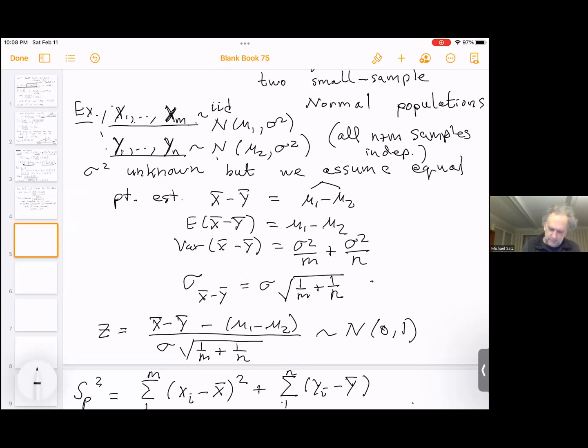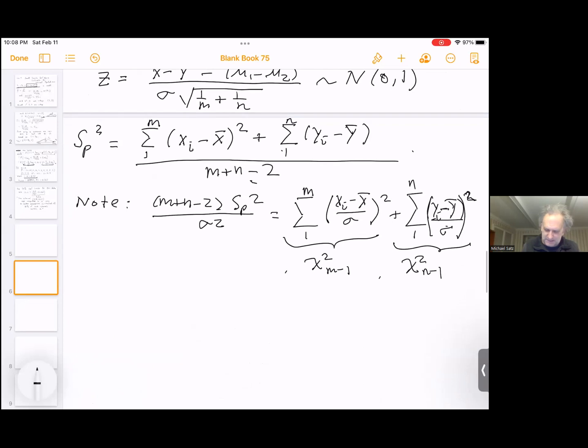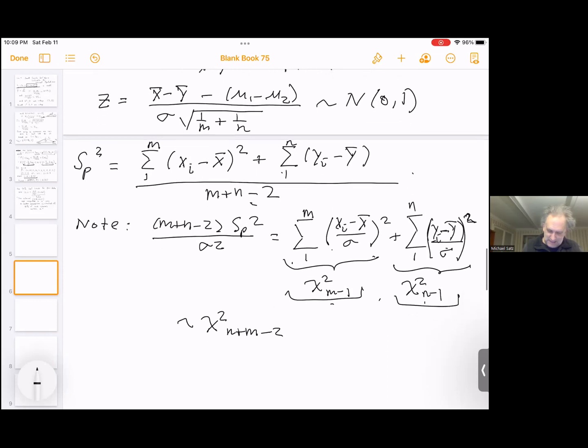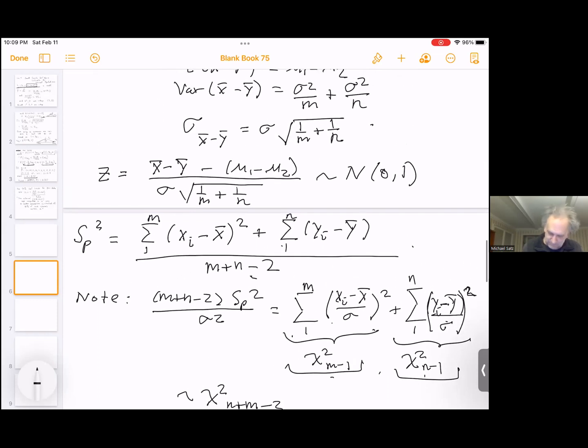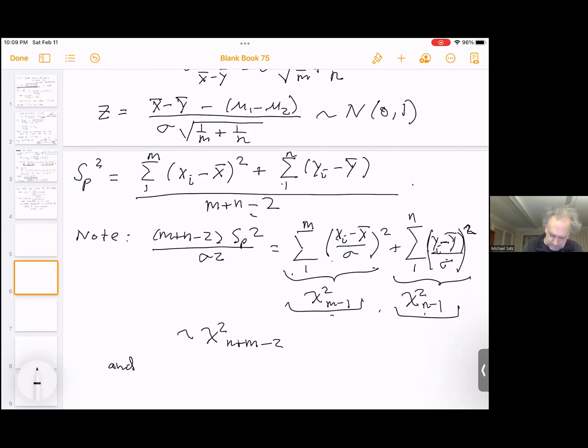The reason I said this now is because when we come down here, this means that this variable is independent of this variable. And I just have two independent random variables, so they're going to add and give me another chi squared where these degrees of freedom will add. So this is chi squared with m plus n minus 2. So if I use this then, it's independent of z too.